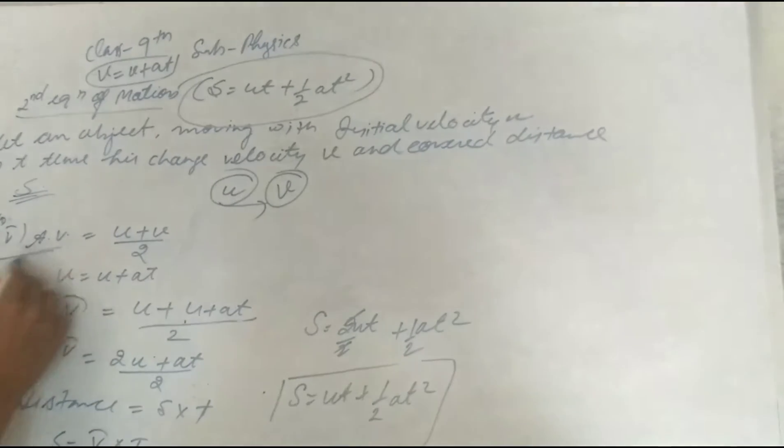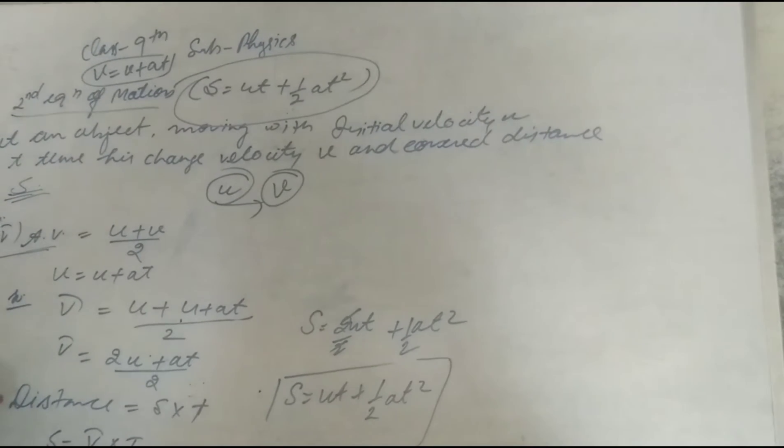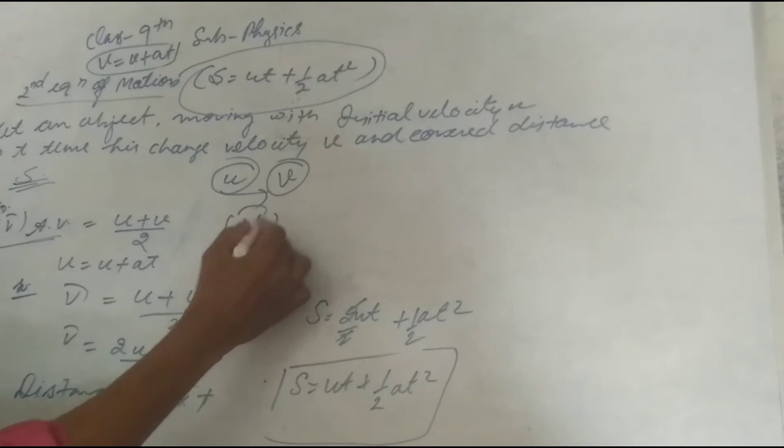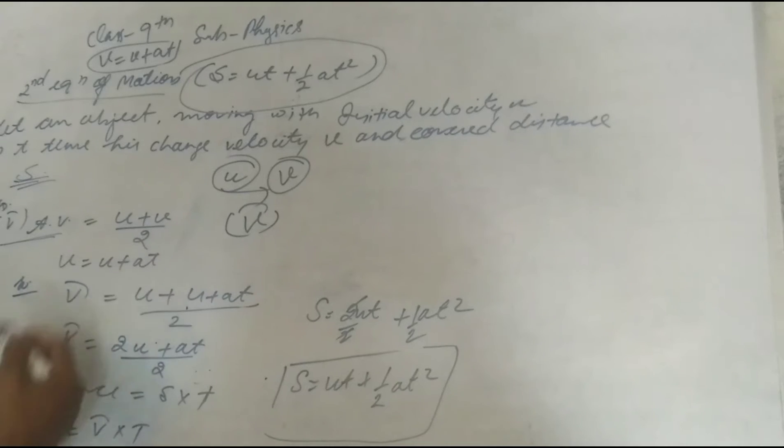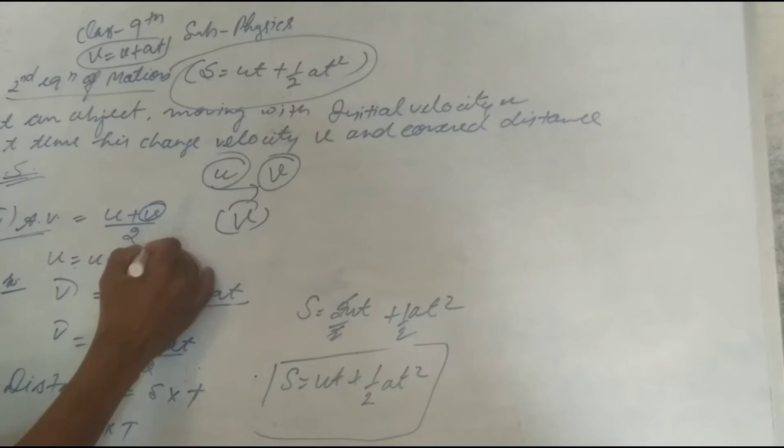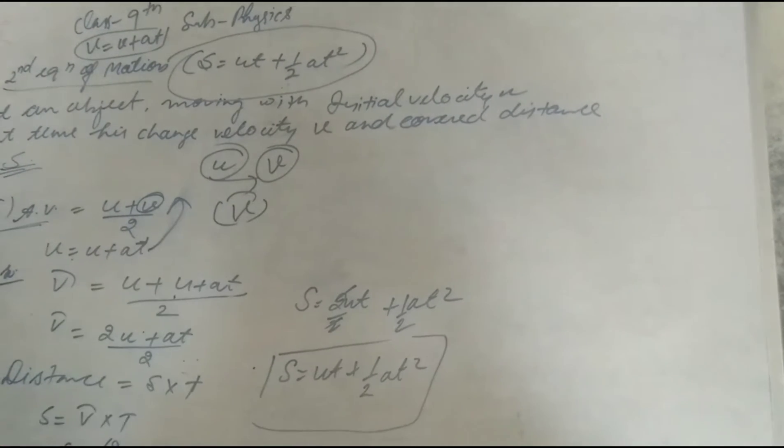So average velocity, what is the average velocity? Initial velocity plus final velocity upon 2. So average velocity we denote it by v bar. u plus v upon 2. What we know, v equal to u plus at. This is the first equation of motion.